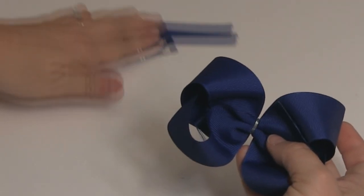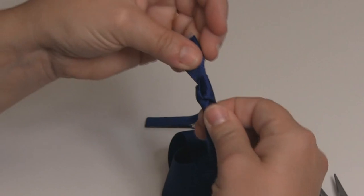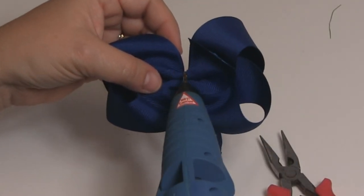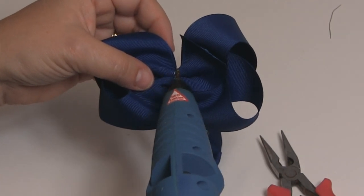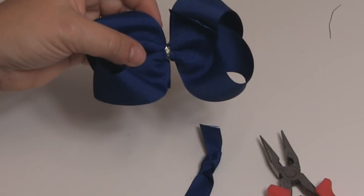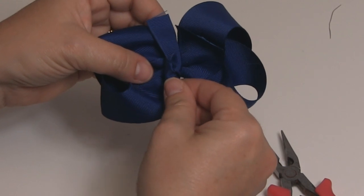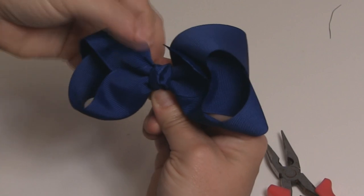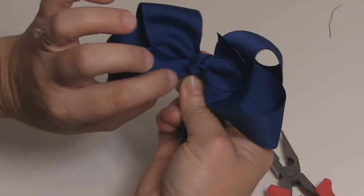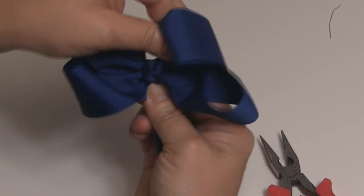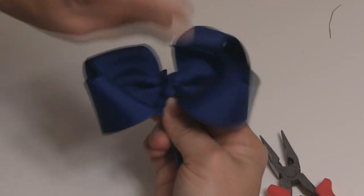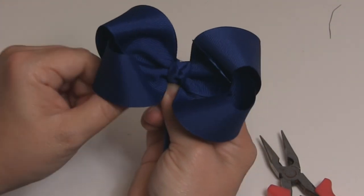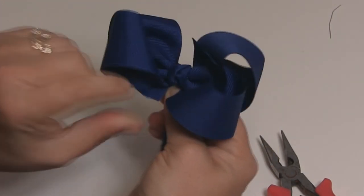So now we're going to attach our knot. It's going to go right here in the center. So I'm going to add some glue right here to the middle, place my knot right there, and then just kind of wrap the sides around. And then you're going to pull out your loops as you're holding it tight. Make sure I got that one down there.